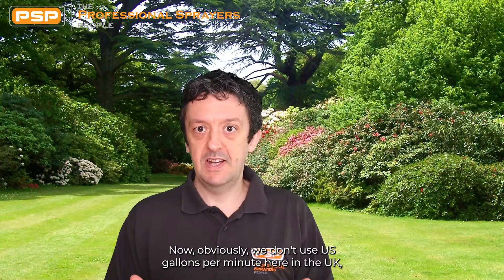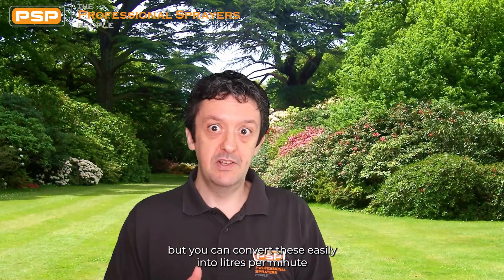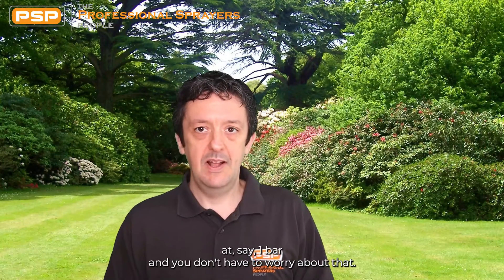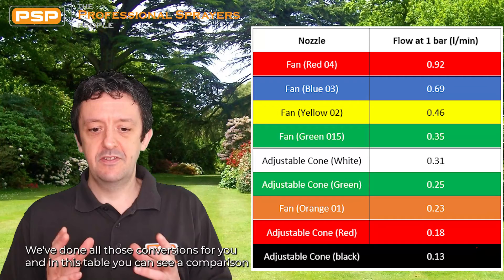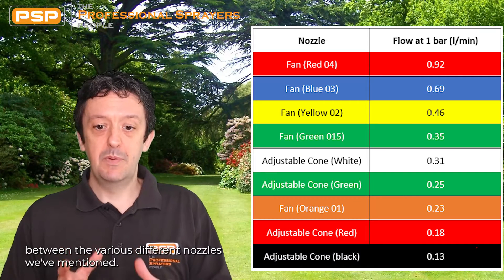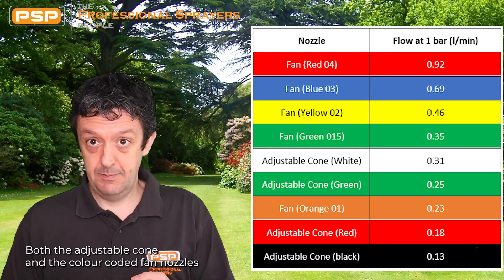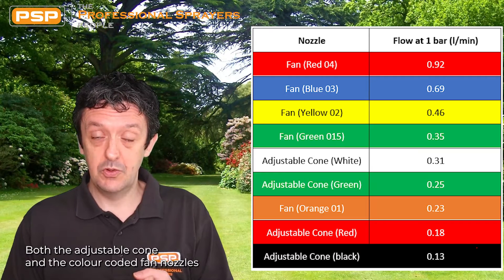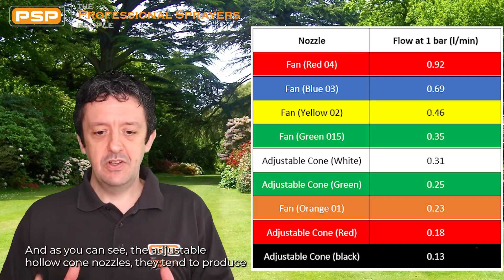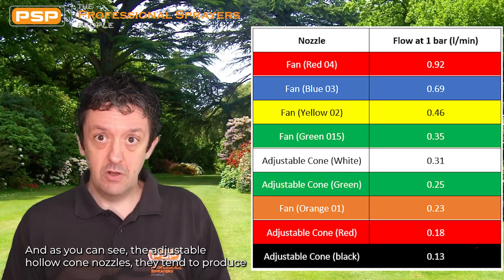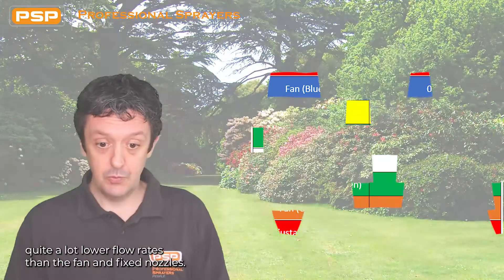We don't use US gallons per minute here in the UK, but you can convert these to litres per minute at one bar. We've done all those conversions for you, and in this table you can see a comparison between the various nozzles — both the adjustable cone and the colour-coded fan nozzles — showing what flow rates they deliver at one bar in litres per minute. As you can see, the adjustable hollow cone nozzles tend to produce quite a lot lower flow rates than the fan and fixed nozzles.